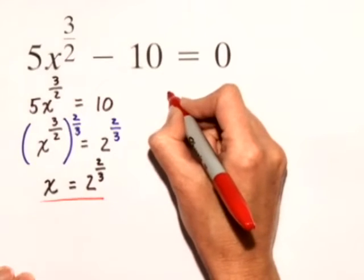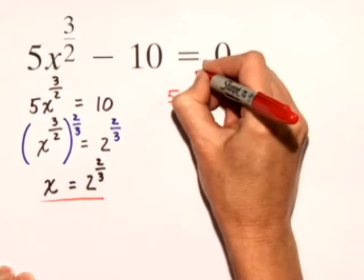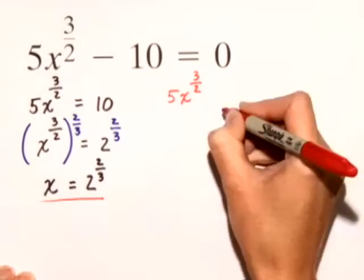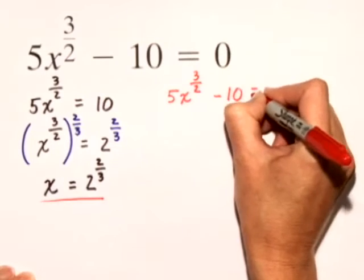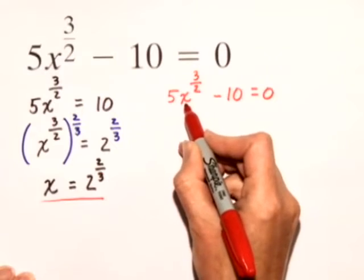When we check, we're going to have 5x to the 3 halves power minus 10 is equal to 0. Now, let's substitute 2 to the 2 thirds in here for x.